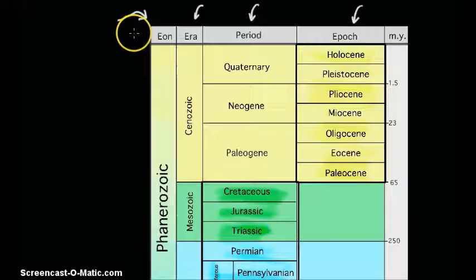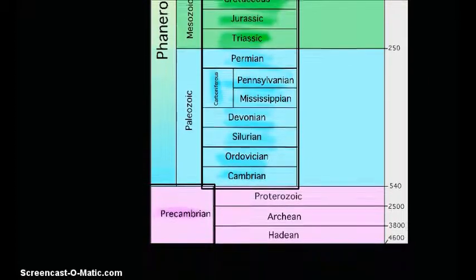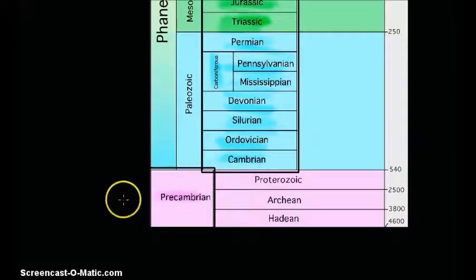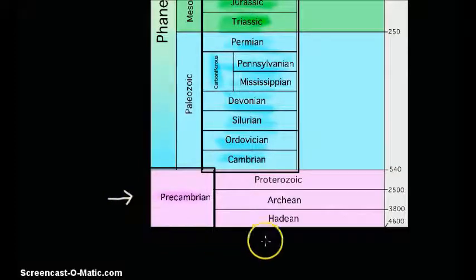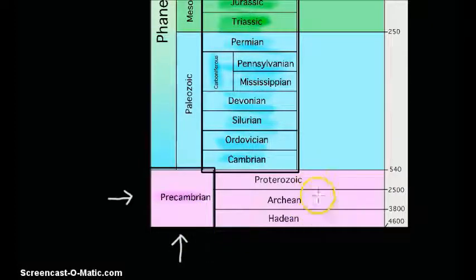There are four eons. The first is the Phanerozoic. It gets a little confusing because when we come down to the bottom of the geologic timescale, we only see the word 'Precambrian.' The Precambrian is a single term used to identify the other three eons: the Proterozoic, the Archean, and the Hadean. The question is: why do we lump them all together instead of investigating them individually?